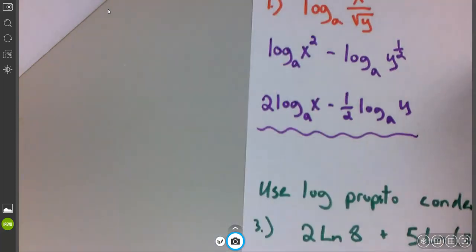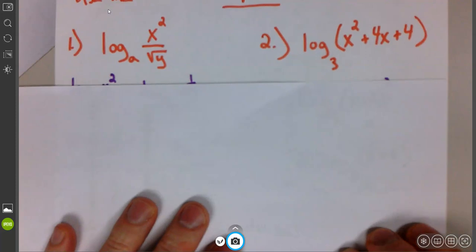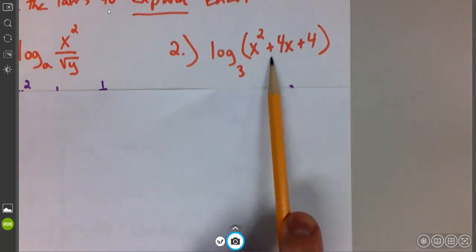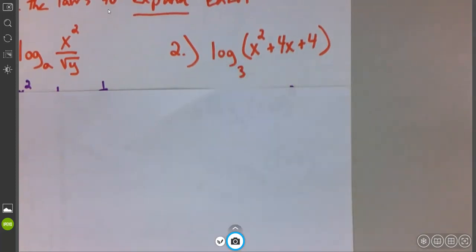Let's look at the other one. The other one was this guy. Okay. So I have log base 3 of x squared plus 4x plus 4. I cannot pull these apart because there's addition inside of a logarithm.